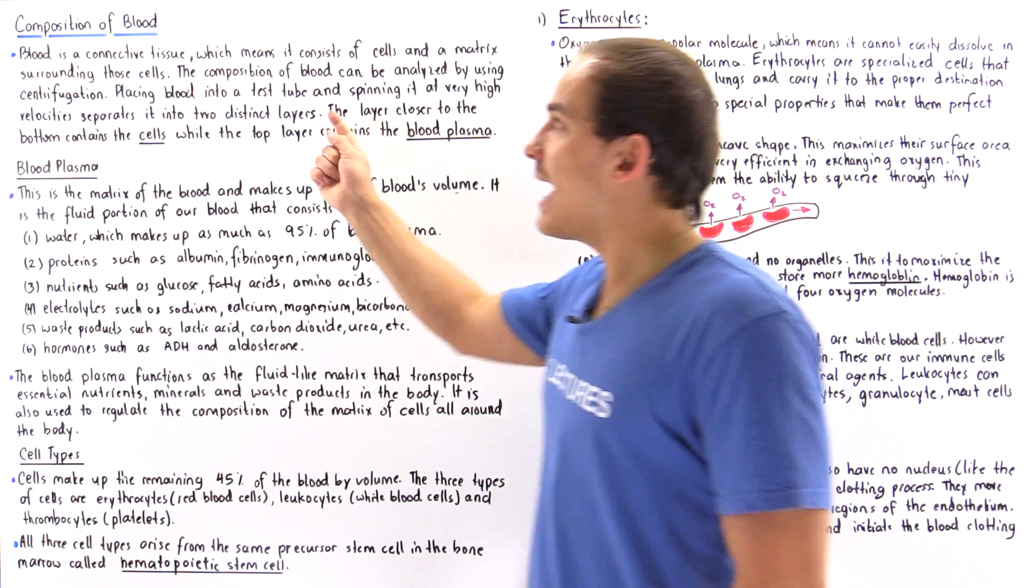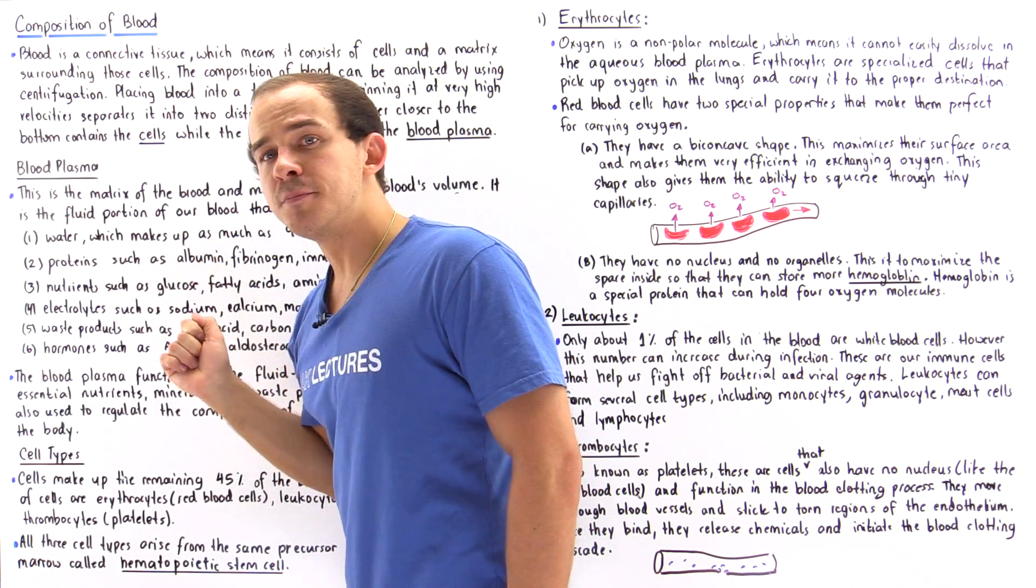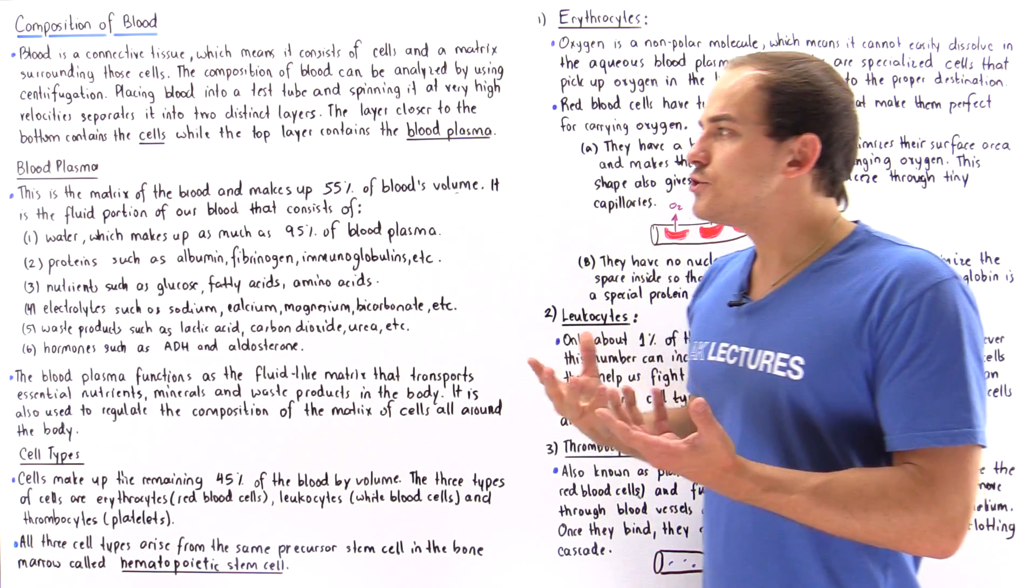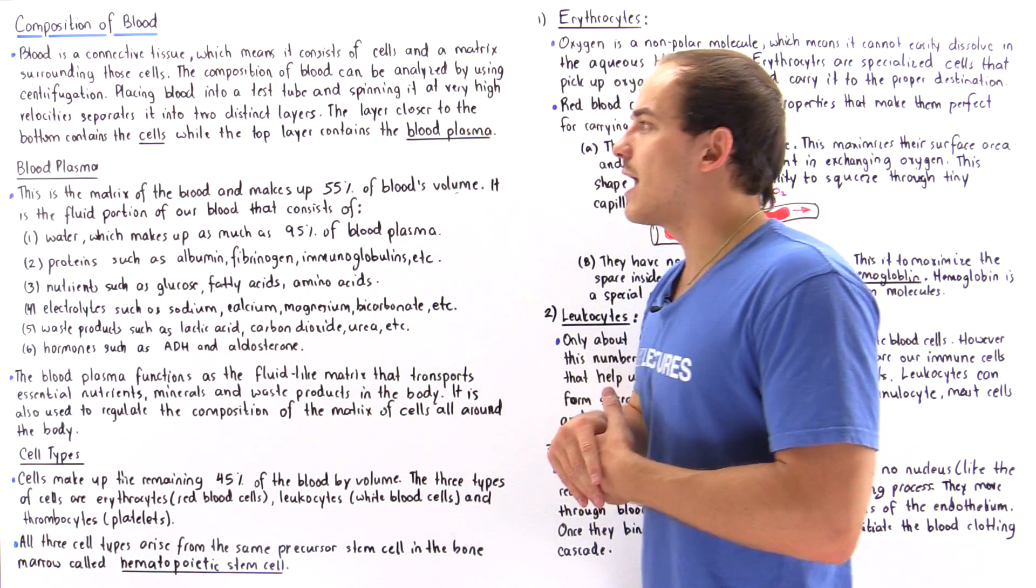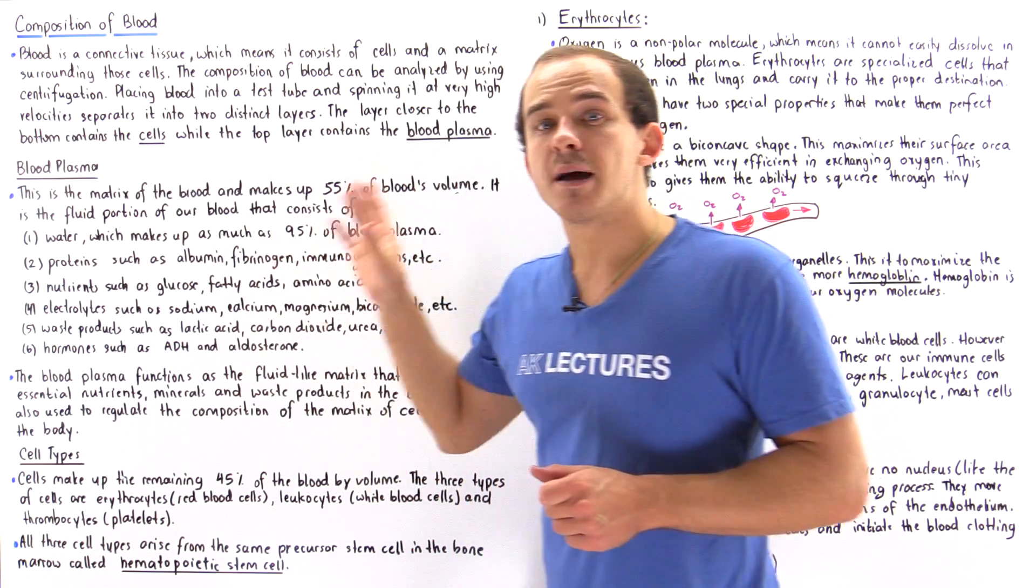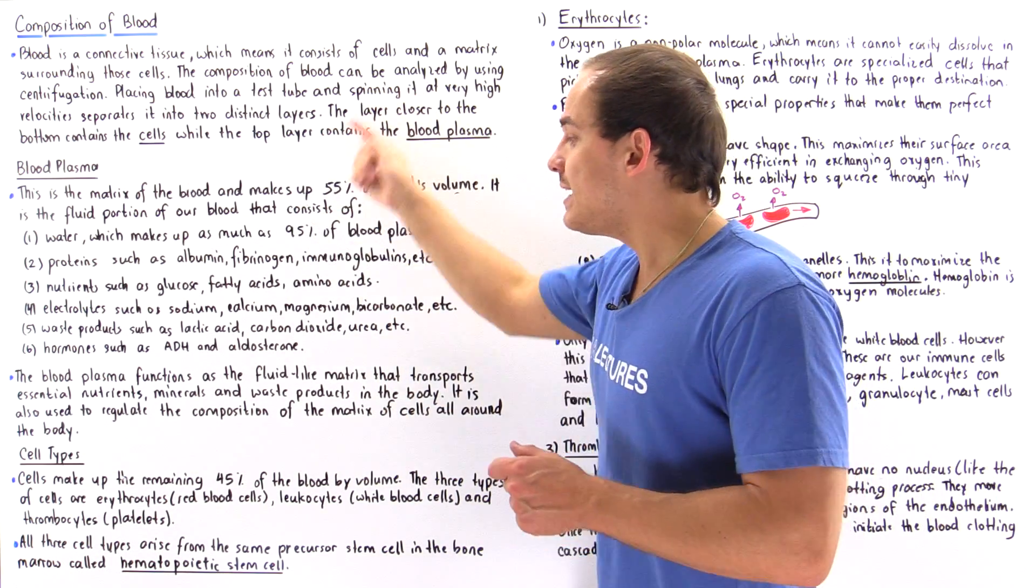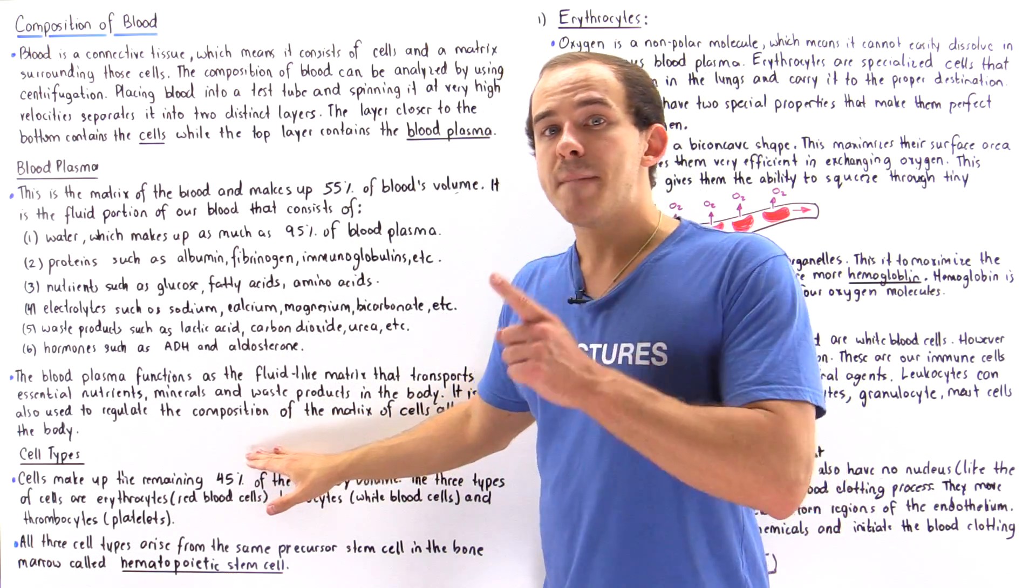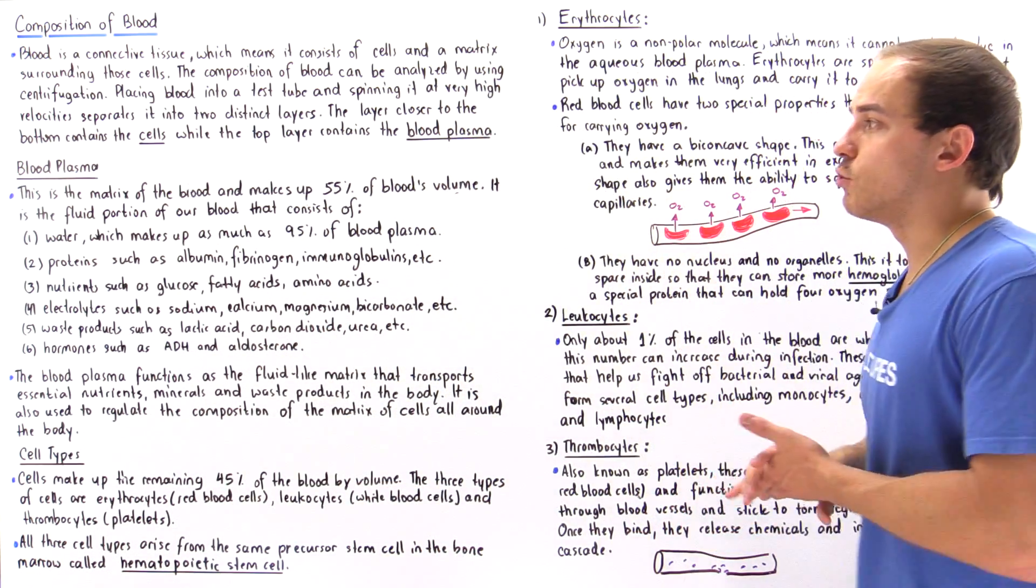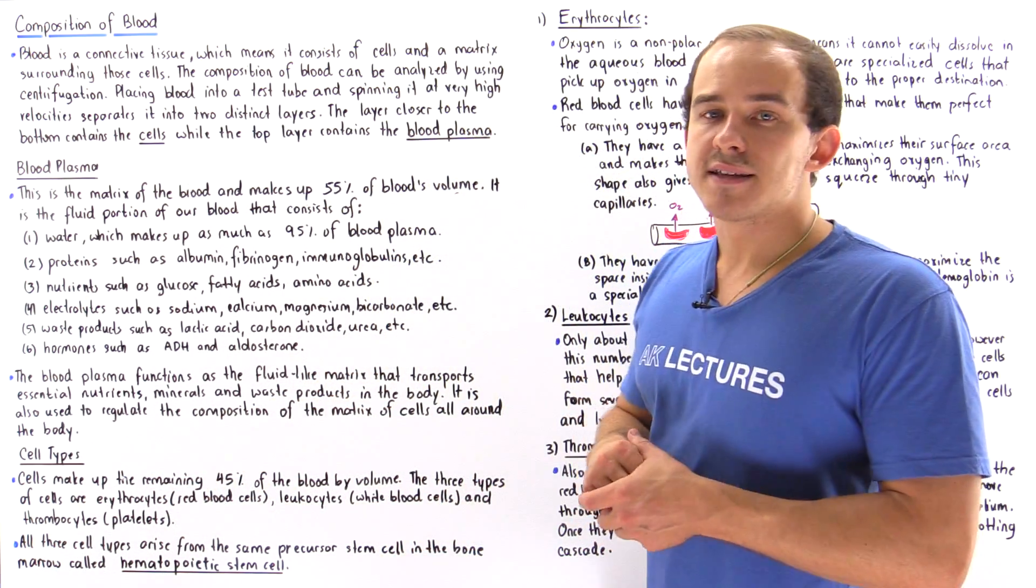Now what about the cells? So earlier we said that our blood is a connective tissue. It consists of the matrix known as the blood plasma and it also contains individual cells. So the question is what types of cells are found inside our blood? Well, notice that if the blood plasma makes up 55% of the volume of blood, that implies that the remaining 45% makes up our cells.